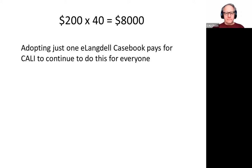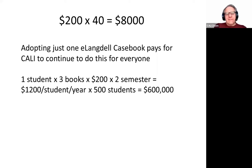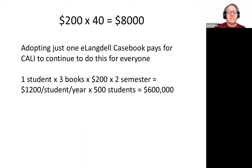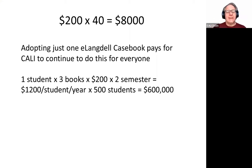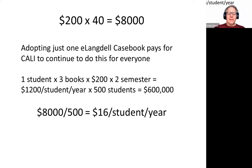Let's extend this out a little bit. One student buying three books every semester across two semesters would come to $1,200 per student per year. If you're the average law school of 500 students and you adopt a lot of open casebooks, that's $600,000 of books a year you could be saving your students — and that would generate some pretty positive press. At present, if you're a school with 500 students paying $8,000 in CALI dues, that's about $16 per student. I hope we're a bargain, and I hope you think the same.